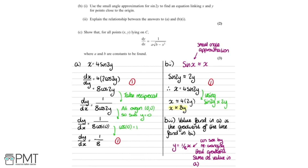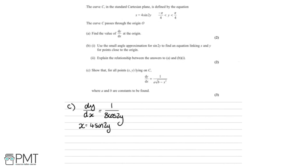In part B, you get one mark for getting down to x approximately equals 8y, and the second mark for the statement that the gradient from part A matches the gradient of this linear approximation. Lastly, we're going to look at part C: show that for all points (x, y) lying on C, dy by dx equals 1 over A times the square root of B minus x squared, where A and B are constants to be found. This is three marks.